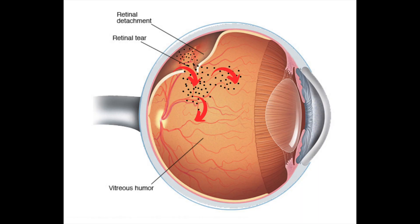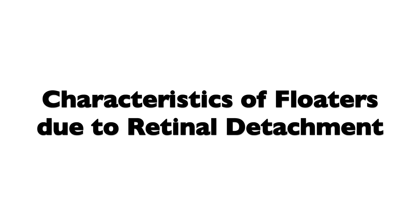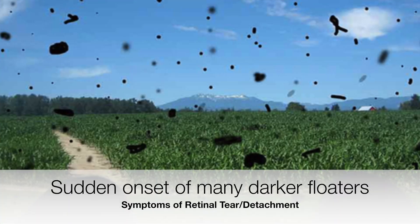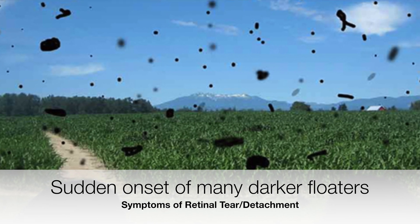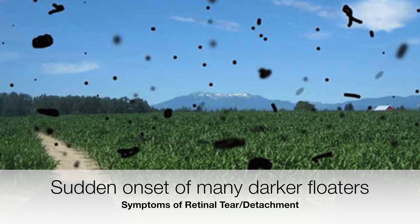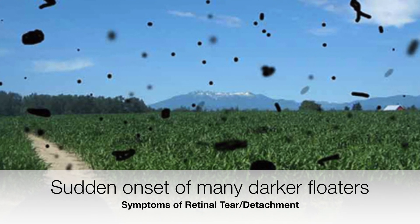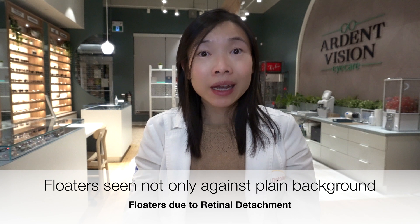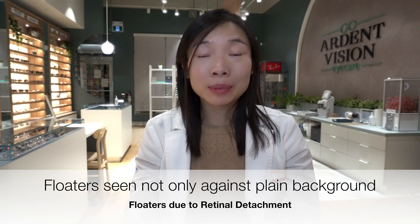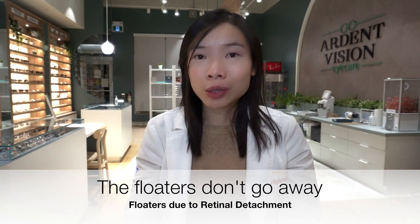The retina helps receive images and send signals to the brain to help us see. When a tear happens in the retina, countless dark granules from its structure are released into the vitreous. Floaters resulting from a retinal tear usually involve a significant increase in many darker pigmented floaters in the affected eye, almost like seeing stars in the sky but all black. These floaters are usually more apparent and not just noticeable against a plain background, and once they appear, they don't disappear.